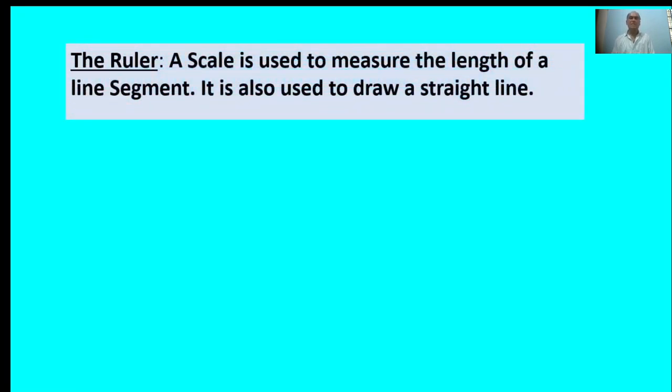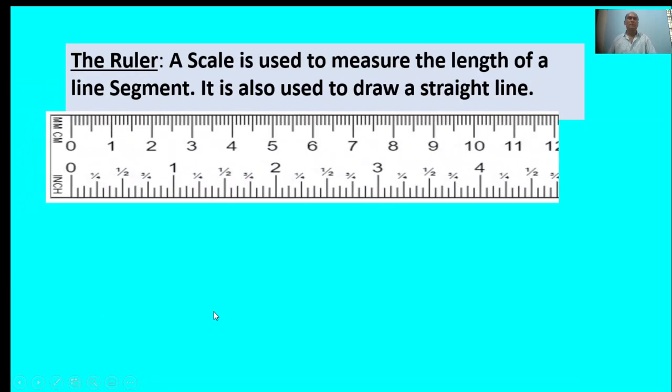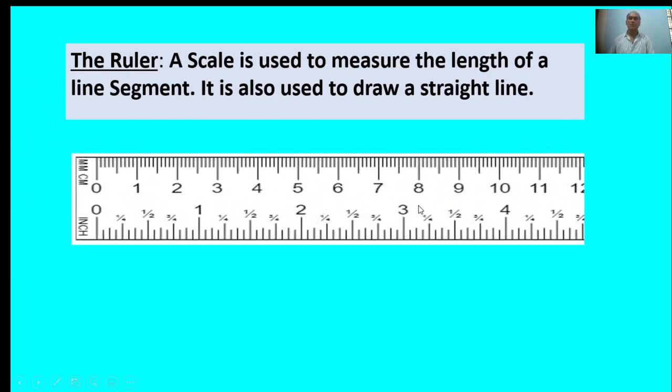First, the ruler. A scale is used to measure the length of a line segment. It is also used to draw a straight line. Here, this is called a ruler.